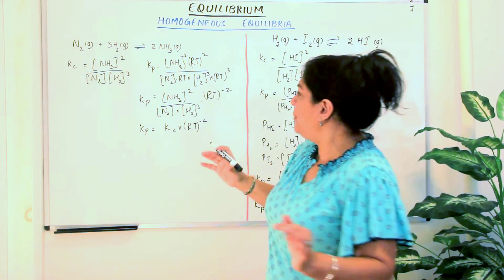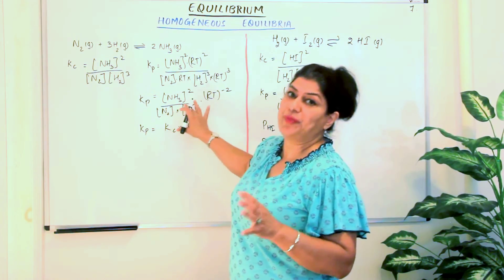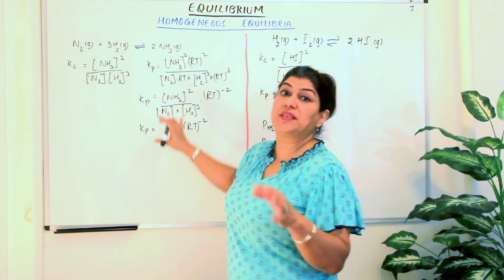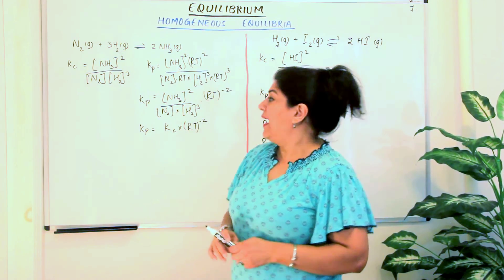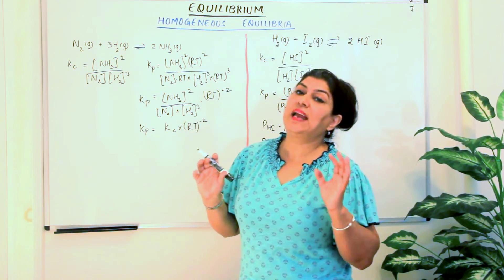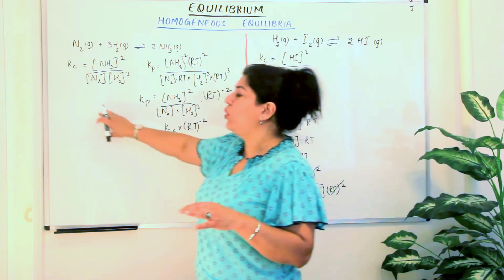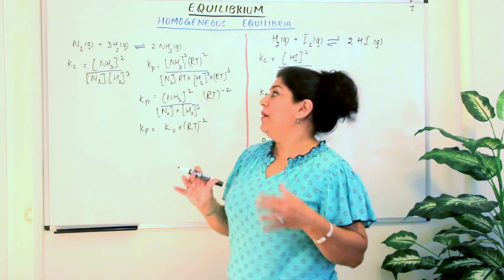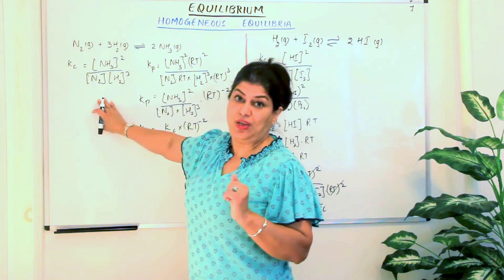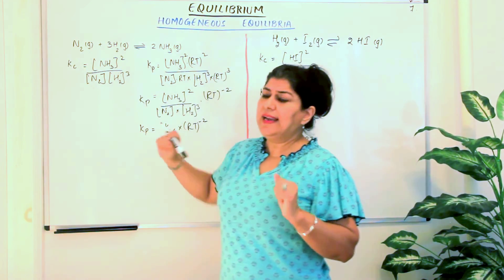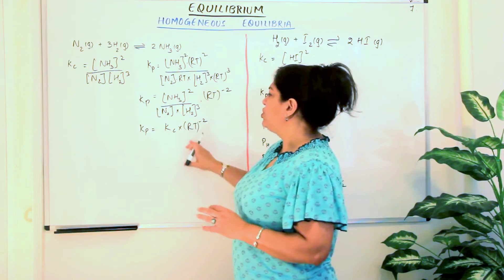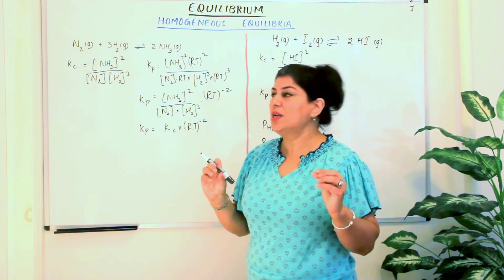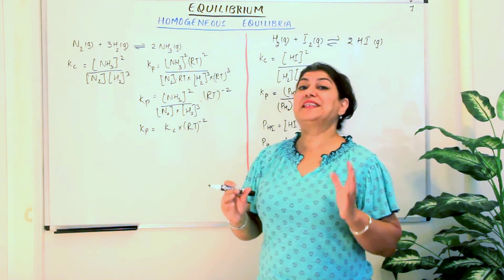So KP is written in terms of pressure, and for homogeneous gaseous equilibria, pressure can be expressed in terms of concentration, allowing us to calculate the relationship between KP and KC. As we saw, in the first case KP equaled KC, but in the Haber's process case KP did not equal KC. Can we have a generalized expression so we wouldn't have to carry out this calculation for every equation? Yes — we can derive a generalized equation.